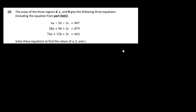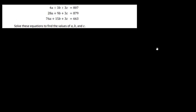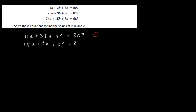Now for part 2, the areas of the three regions k, l and n give us three equations. Equation 1 is 4a plus 3b plus 3c equals 807. Equation 2 is 28a plus 9b plus 3c equals 879. Equation 3 is 76a plus 15b plus 3c equals 663. We need to solve these simultaneous equations to find the values of a, b and c. We'll eliminate the c terms by combining pairs of equations.